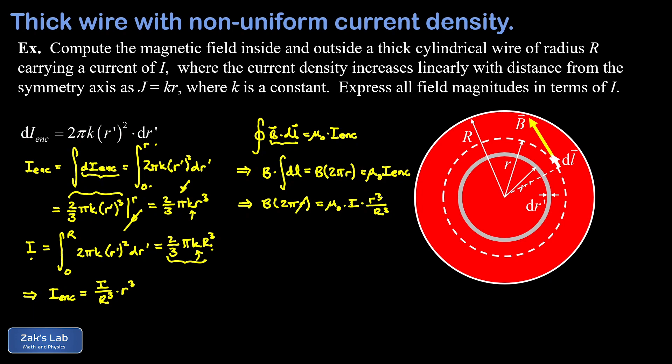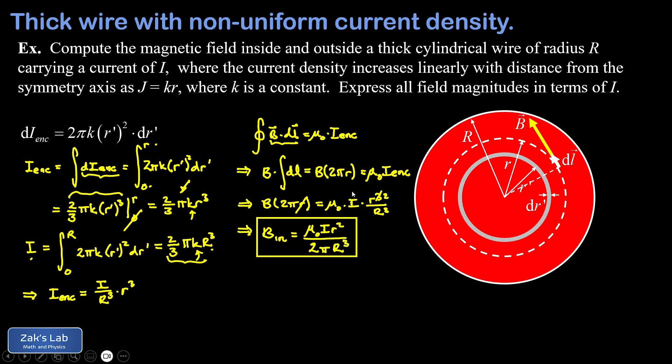We cancel one factor of little r from both sides, leaving little r squared in the numerator, and solve for B. Calling this B sub in — the field inside the wire — we get B_in equals μ₀ times I times little r squared, divided by 2π times big R cubed. So we've found a quadratically increasing magnetic field within the wire, compared to the previous result for uniform current density where the field increased linearly.